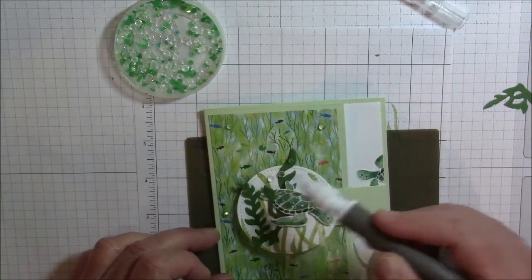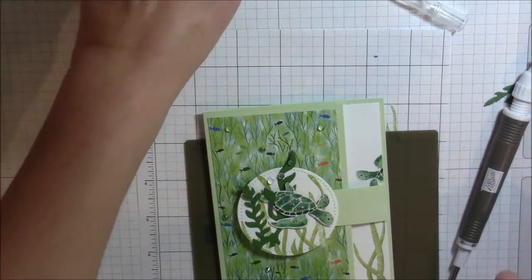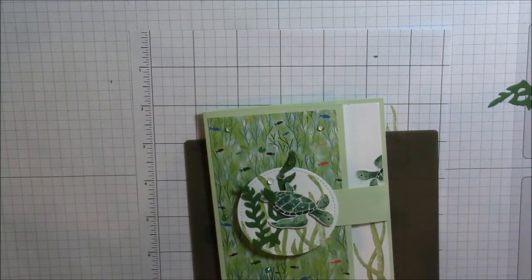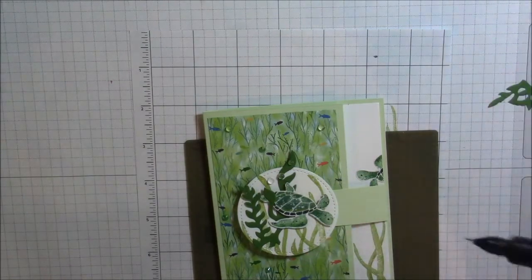So one, two, three, four, five, six, seven, eight, nine. I count them to make sure I put them on all the dots. Now one last thing we are going to add - I want to add a little bit of texture to my turtle.